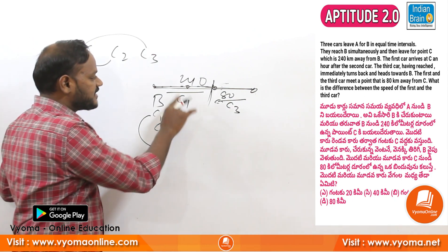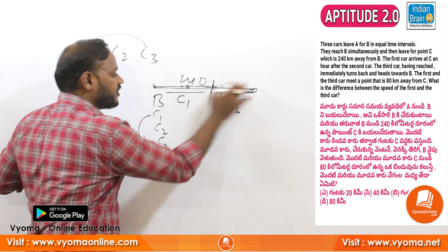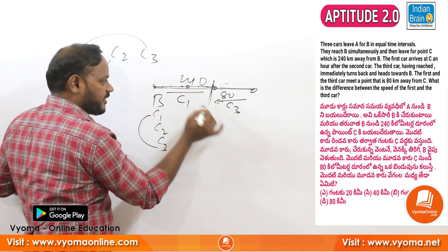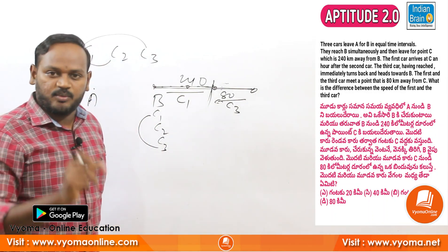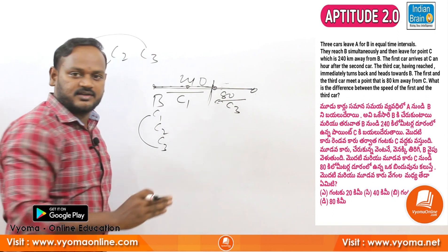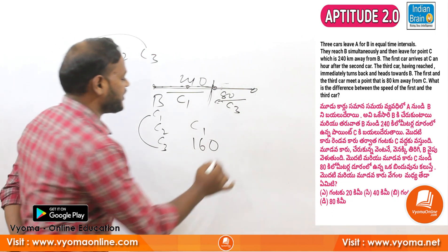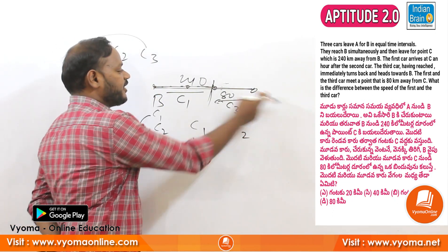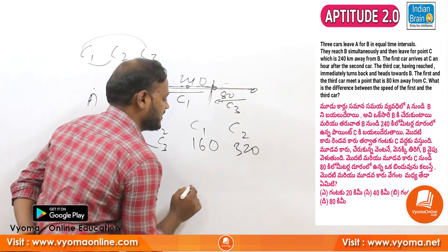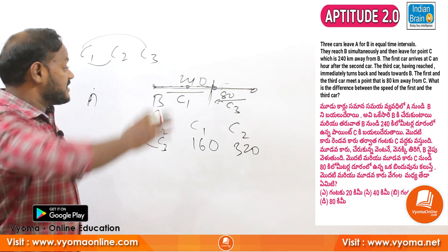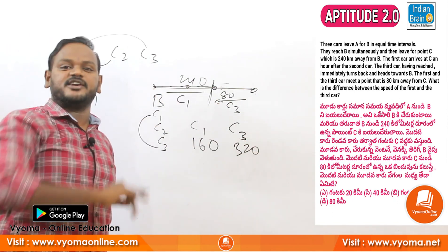240 minus 80 equals 160. So C1 is at 160 km from C. The distance ratio between C1 and C3 is 160 to 80, which simplifies to 1 is to 2. The distance ratio is 1:2, which is also the speed ratio when time is the same. Time ratio is 1:2 — a very important and powerful point.